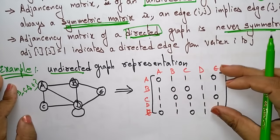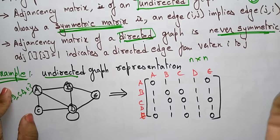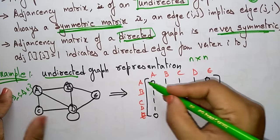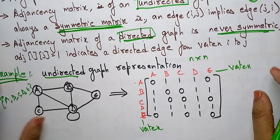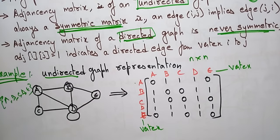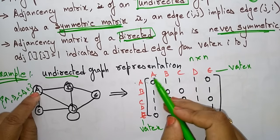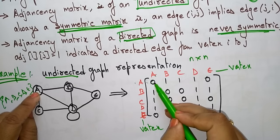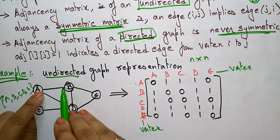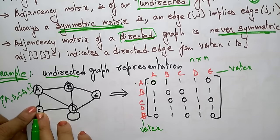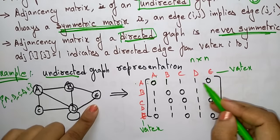The adjacency matrix is expressed in terms of an n by n matrix. Now let's calculate the connections. From a to a there is no edge, so keep 0. A to b - yes, there is an edge - 1. A to c - 1. A to d - 1. A to e - there is no direct edge, so it is 0.